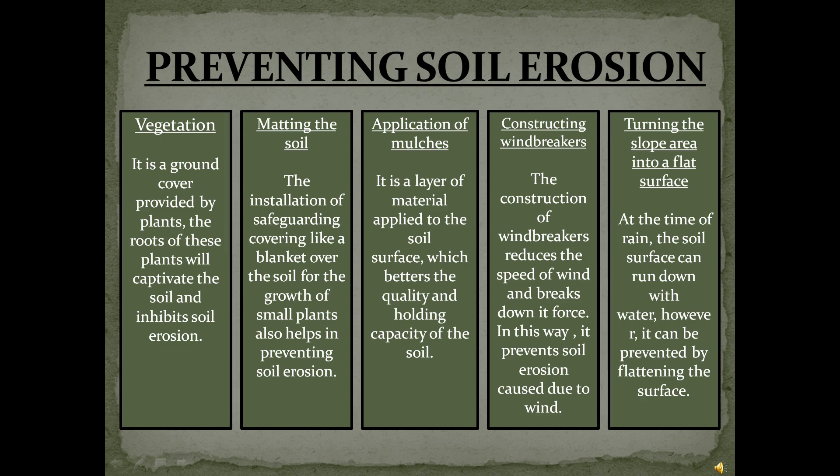Third, application of mulchers: it is a layer of material applied to the soil surface which improves the quality and holding capacity of the soil. Fourth, constructing windbreakers: the construction of windbreakers reduces the speed of wind and breaks down its force, thereby preventing soil erosion caused by wind. Fifth, turning the slope area into a flat surface: at the time of rain, the soil surface can run down with water.